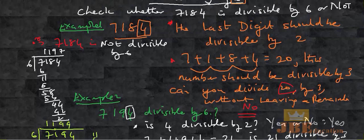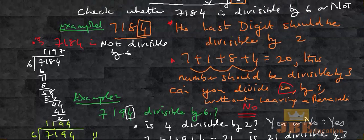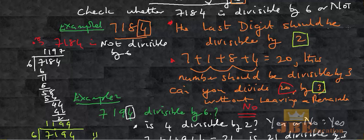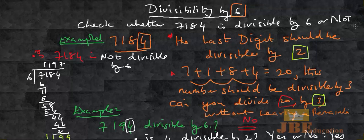Remember these conditions: the last digit should be divisible by 2, and the sum of the digits should be divisible by 3. If both conditions are met, then the number is divisible by 6.